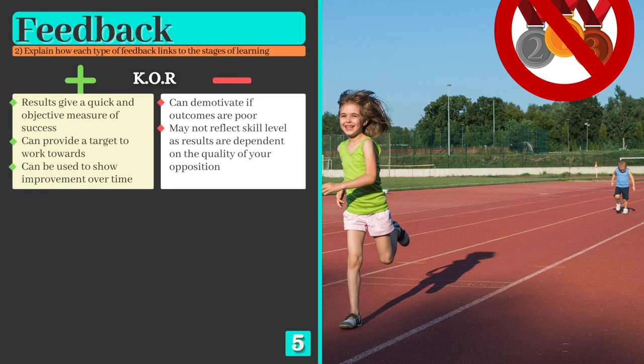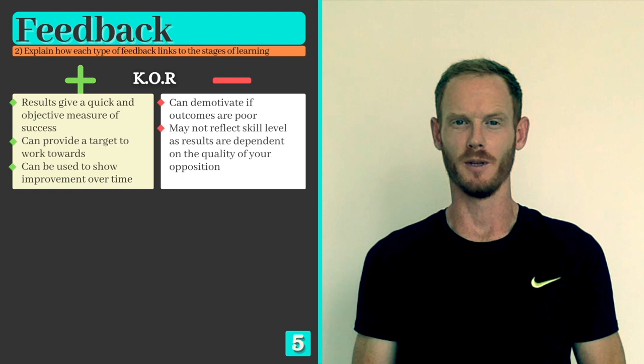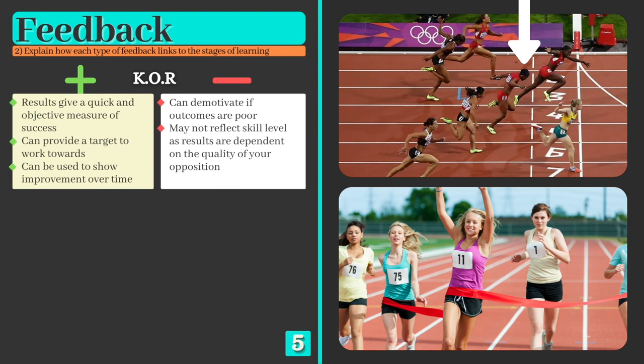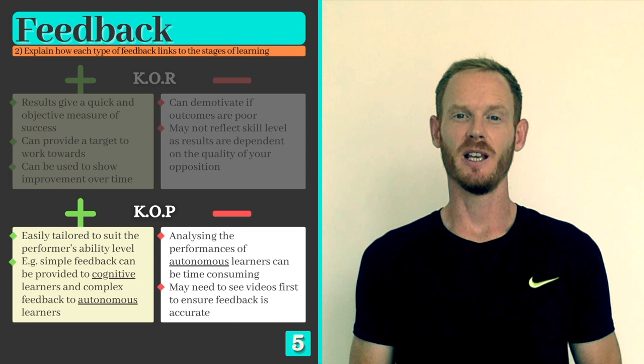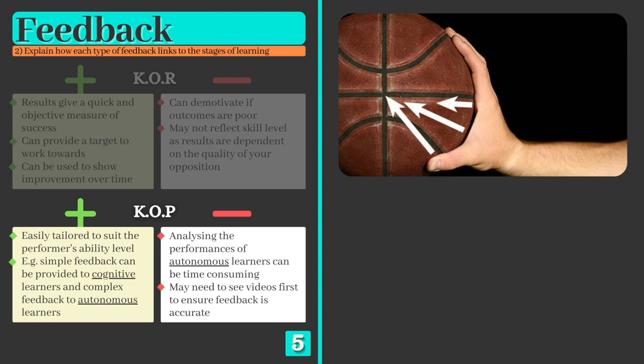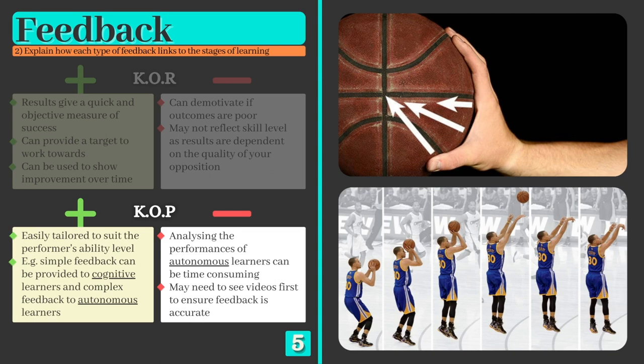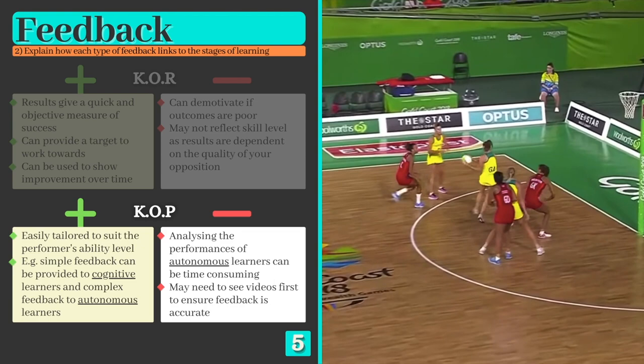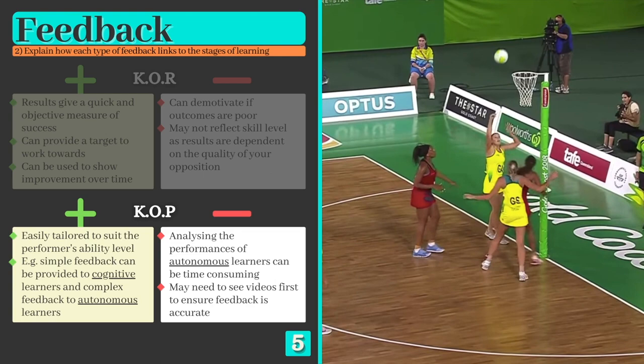Knowledge of performance can be easily tailored to suit an individual's ability level — for example, simple feedback on one or two areas for cognitive learners, while specific and detailed feedback is given to those with more experience. A disadvantage is that when analysing experienced or autonomous learners, there may be several skills and techniques that require feedback, which can be time consuming. Coaches may also need to view videos of a performance first to ensure their feedback is accurate.